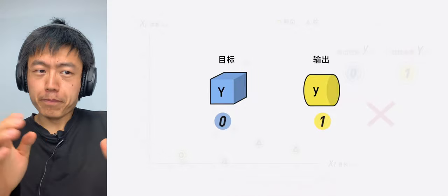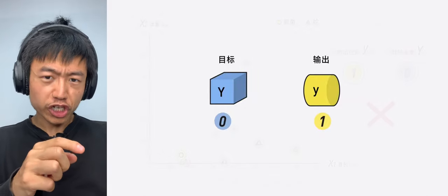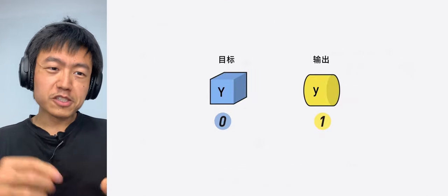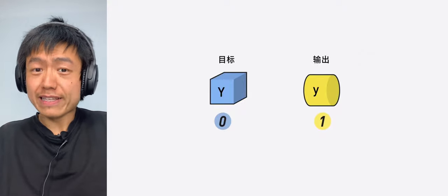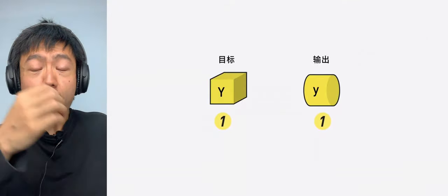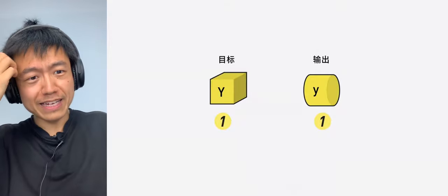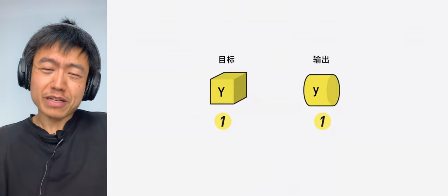If they are not the same, the classification of the machine is wrong. So the closer the output value, lowercase y, is to the target value, uppercase Y, the more accurate the machine will be.